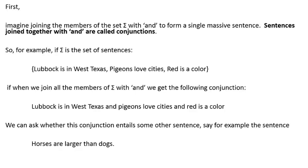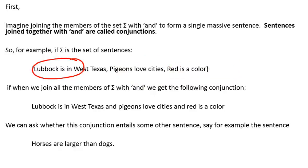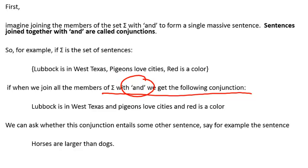Here's our set sigma. It consists of three sentences: 'Lubbock is in West Texas,' 'pigeons love cities,' and 'red is a color.' This set is then converted into one big long sentence by conjoining all its members.